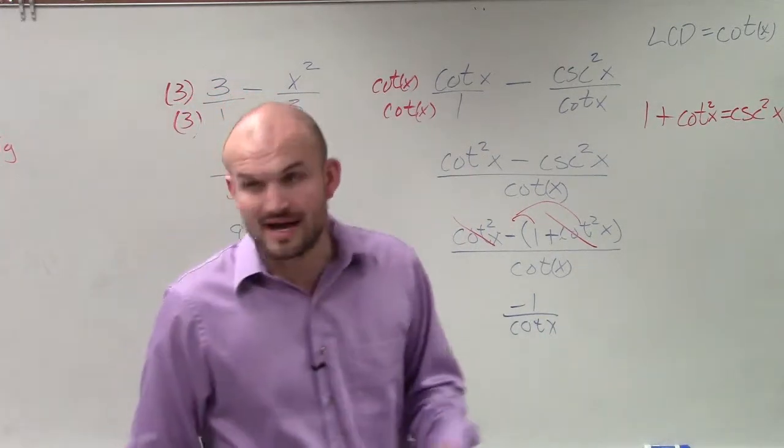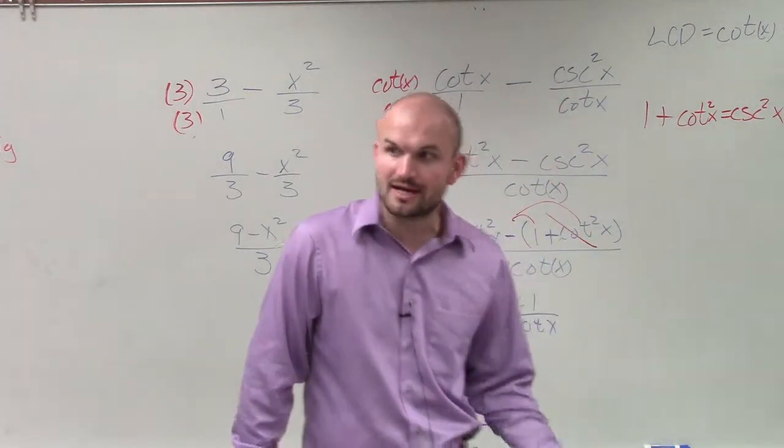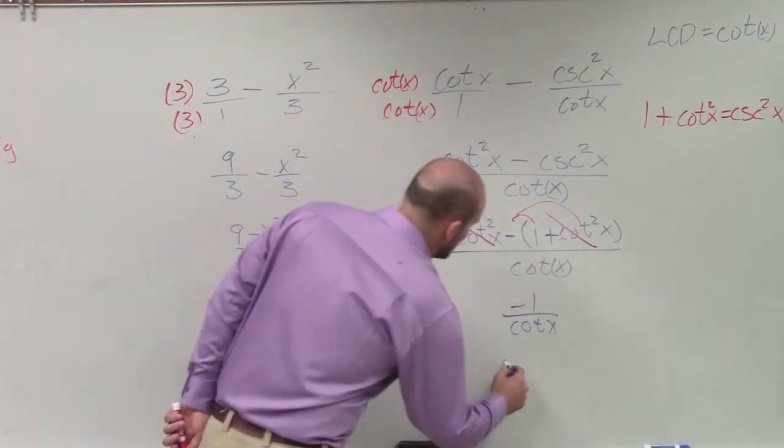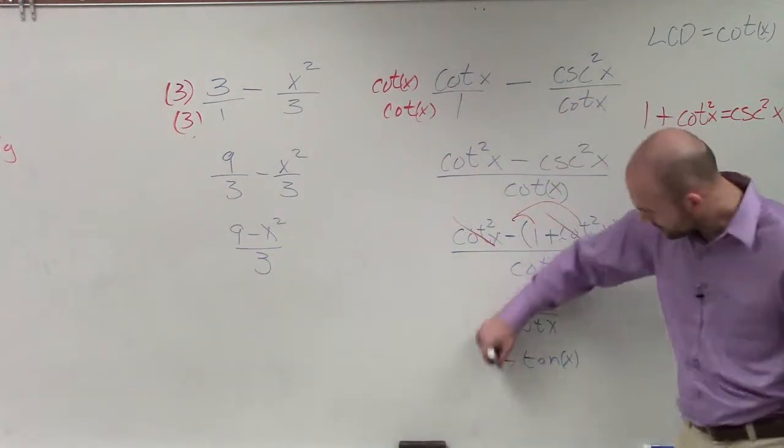And now we see 1 over cotangent of x. I know when cotangent is in the denominator, by applying the reciprocal, I can rewrite that as negative tangent of x. That would be your final answer.